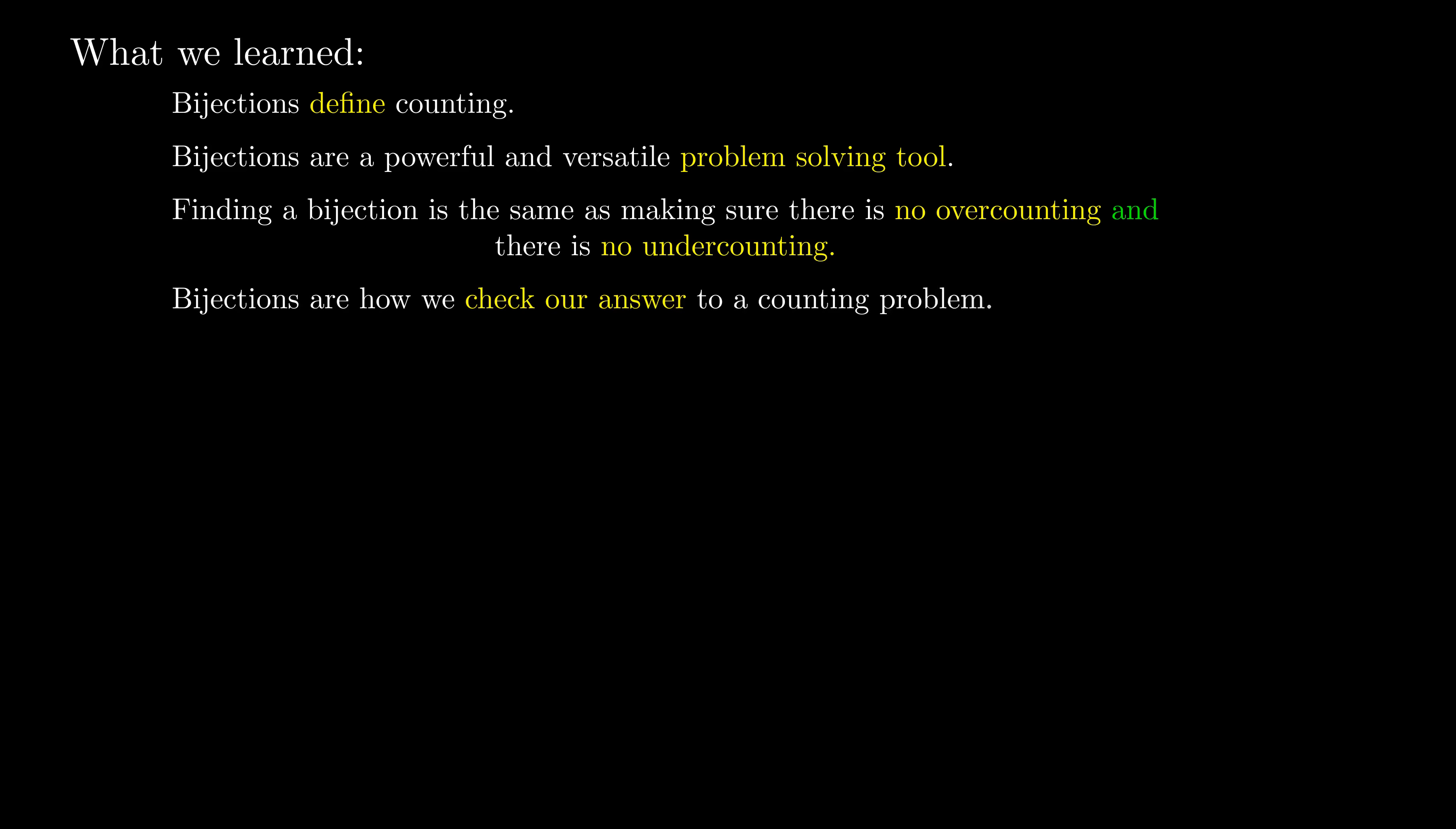So what did we learn? Firstly, bijections are how we define counting. Secondly, they are an extremely versatile and powerful problem-solving tool we can use to solve really hard counting problems by converting them into easier problems. Next, making sure we haven't overcounted and making sure we haven't undercounted is essentially the same as finding a bijection. And lastly, it is the method by which we check and verify our answers in counting problems. Alternatively, just check for both overcounting and undercounting.